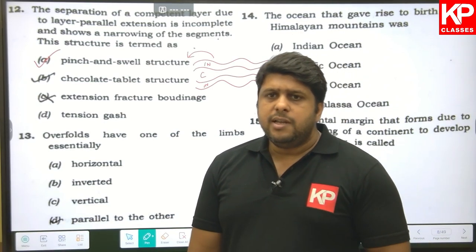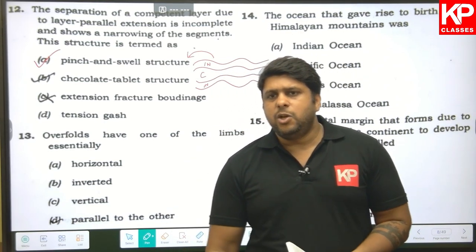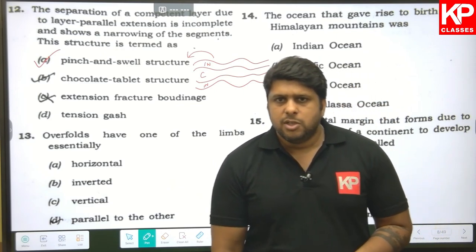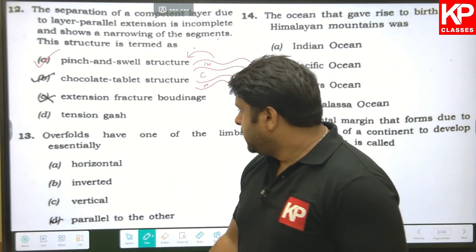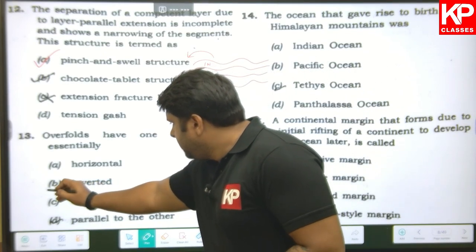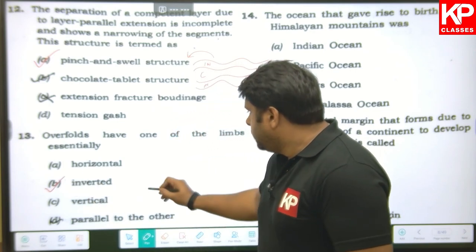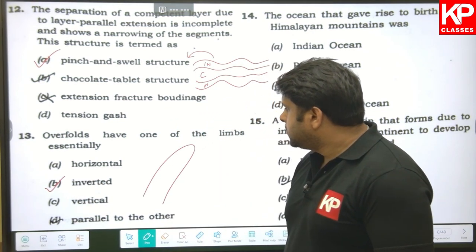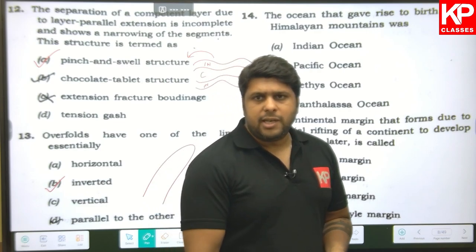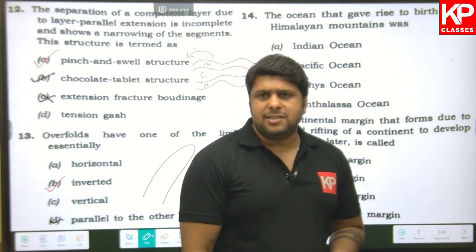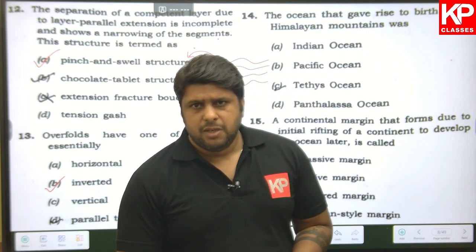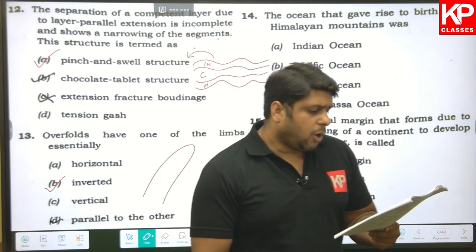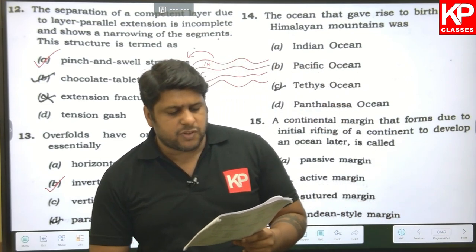Question thirteen: overturned folds have one of the limbs essentially what? Overturned folds have one limb inverted — both limbs dip in the same direction and one limb is overturned. So B is the right answer. Question fourteen: the ocean that gave rise to the birth of the Himalayan mountains was the Tethys Ocean, so C is the right answer.